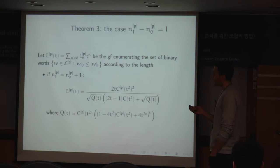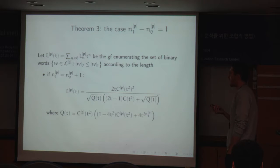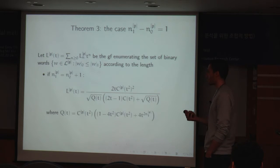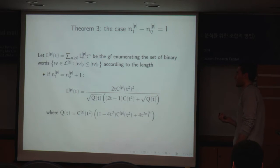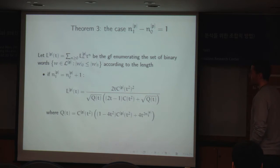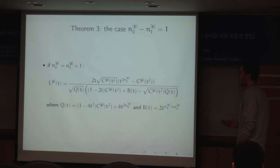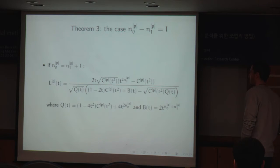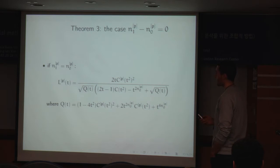The second generating function we introduce is L, which enumerates the set of binary words avoiding pattern P where every word cannot contain more bits 0 than bits 1, counted according to length. Again we go by cases: when there is one more bit 1, we have this definition; when there is one more bit 0, we have this definition, which grows in size; and when there is the same number of bits 1 and 0 in the pattern, we have this definition.